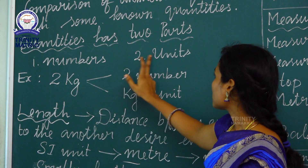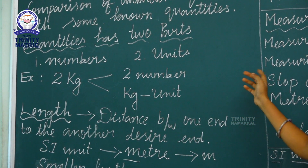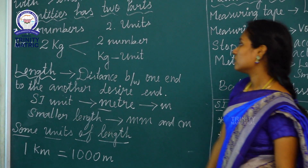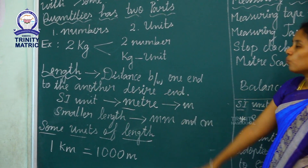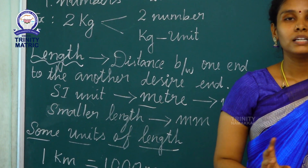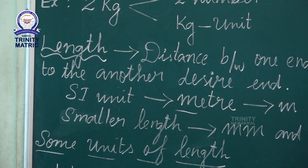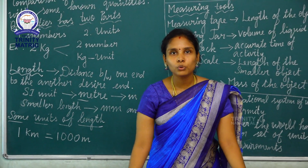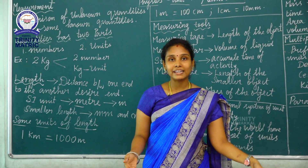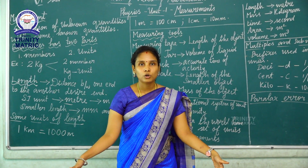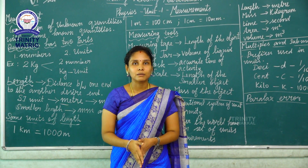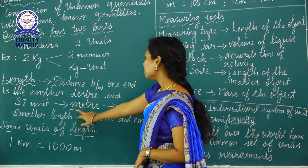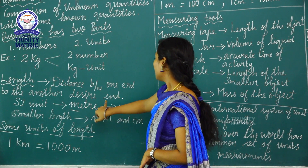The measuring quantities has two parts: numbers and units. Next we have to see about length. Length means the distance between one end to the another desired end. The unit of length is meter, with symbol m.